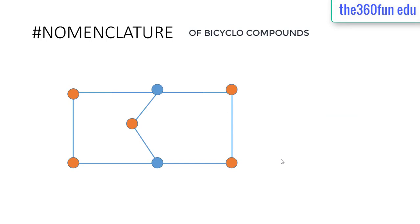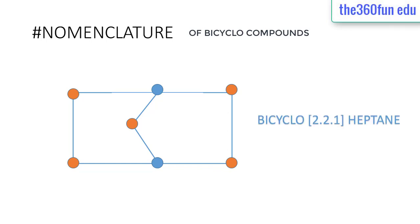Now let us take the example of this compound. Here we can see there is a bridge which attaches the two rings, and there is a carbon present in this bridge. You may want to pause and try the problem yourself. The name of this compound is bicyclo[2.2.1]heptane.